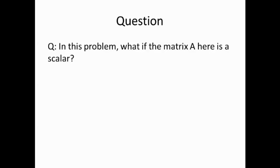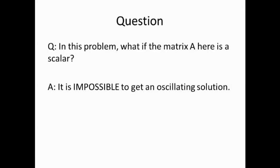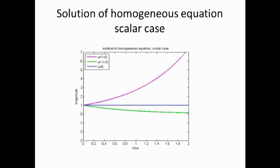So the question is, what if A matrix is a scalar? The answer is, it's impossible to get an oscillating solution. So here is the solution when A is a scalar, and here is the simulation result. As we can see, no matter what value A is, it just cannot oscillate. So, the intent of this problem is to help us explore the differences between the matrix exponential and ordinary exponential function.